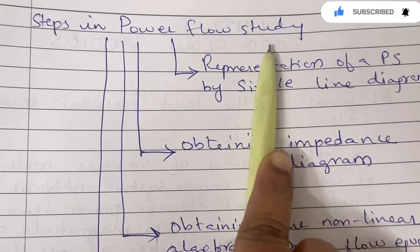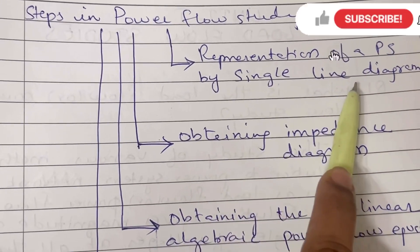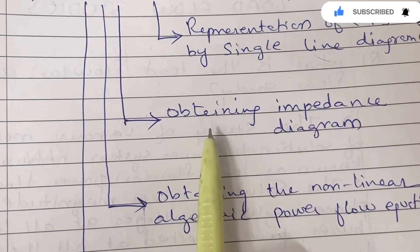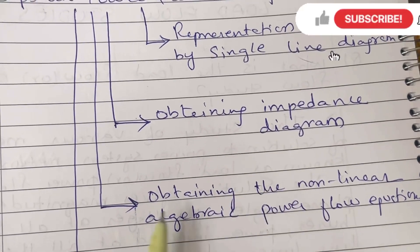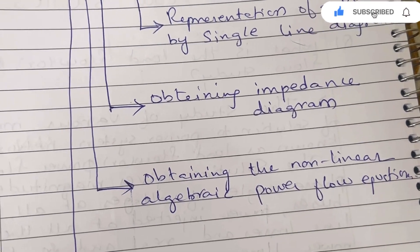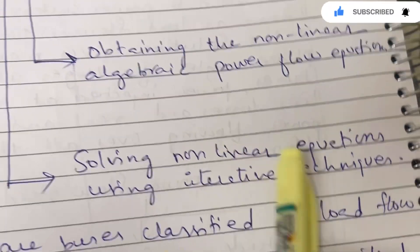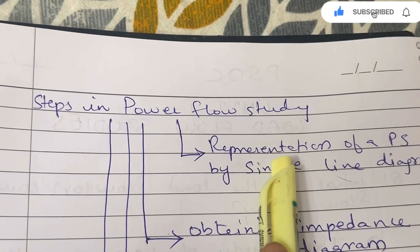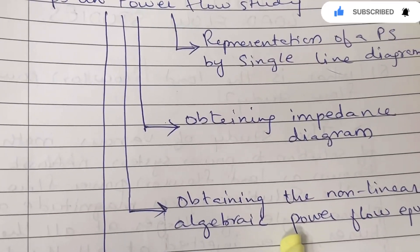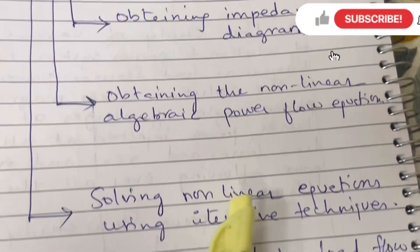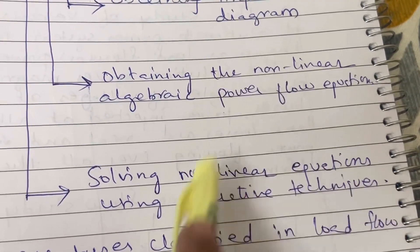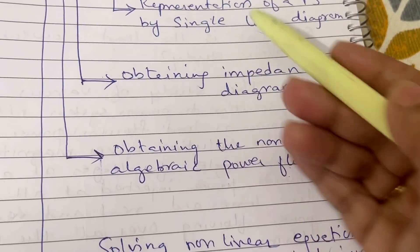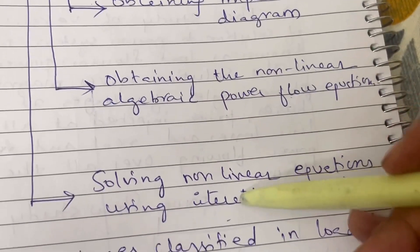The steps in power flow study are: first, representation of the power system by a single line diagram; second, obtaining the impedance diagram; third, obtaining the non-linear algebraic power flow equations; and fourth, solving those non-linear equations using iterative techniques — meaning we repetitively check and solve the equations. So the sequence is: single line diagram, impedance diagram, non-linear algebraic equations, then solving by iterative techniques.